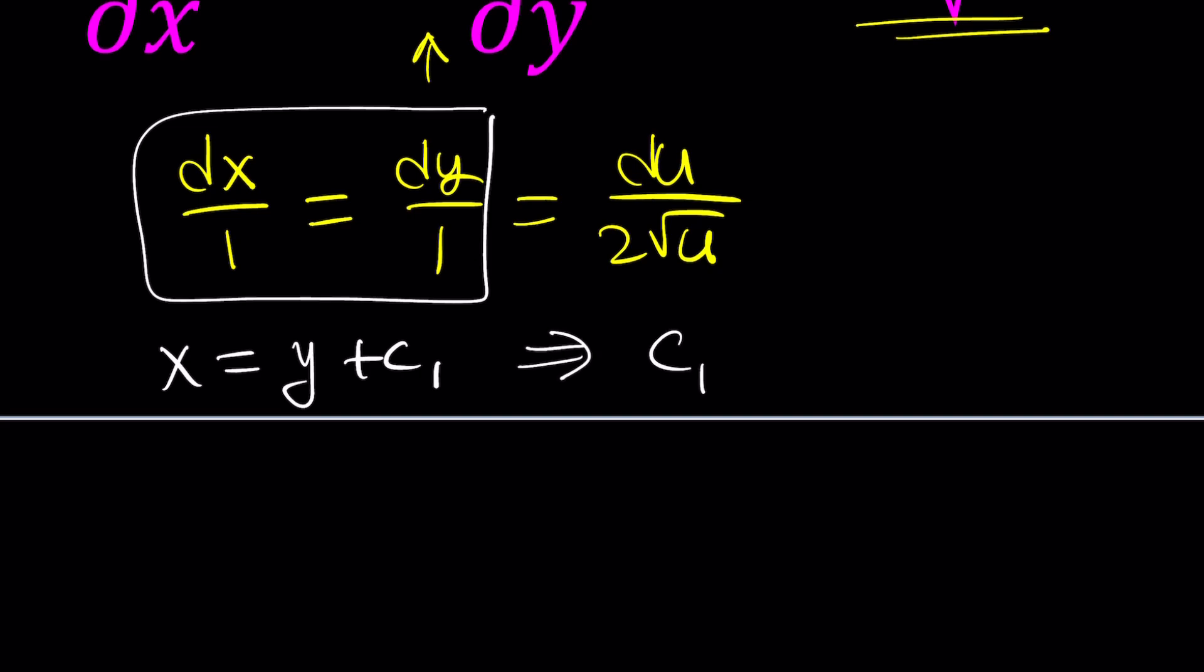Let's go ahead and isolate c sub 1 because we're going to need it. So from here, c sub 1 is going to be x minus y. If you isolate it. Great. So that's something we're going to use. Let's go ahead and frame it and keep it for future use.